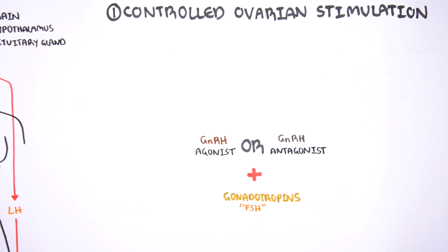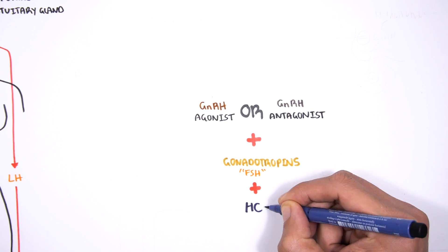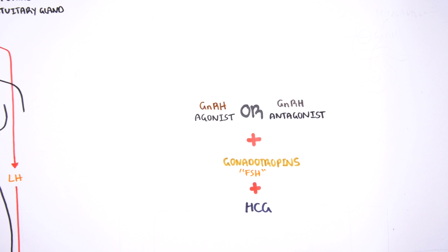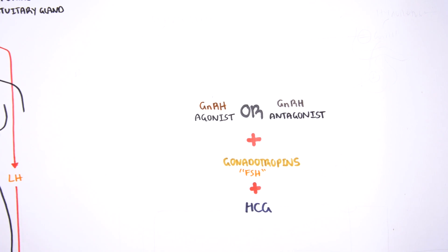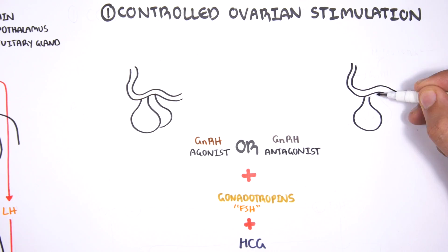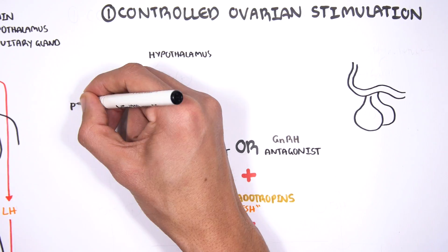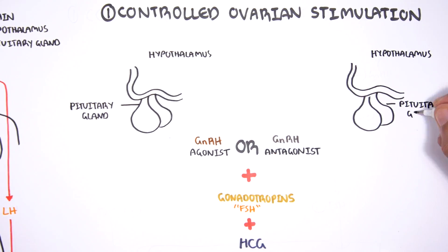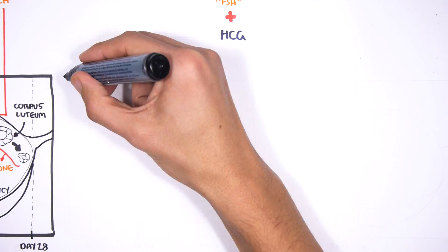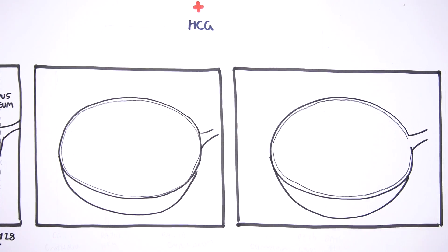And then finally, human chorionic gonadotropin, or HCG. These three injections are used in the first step of in vitro fertilization, and their role is to essentially stimulate follicle development. Here is the hypothalamus and the pituitary gland again, and here is the ovary again, containing many follicles ready to develop.